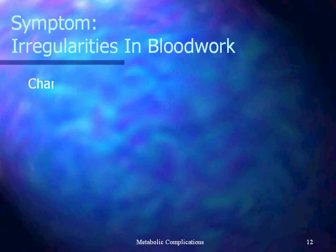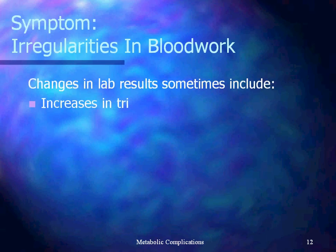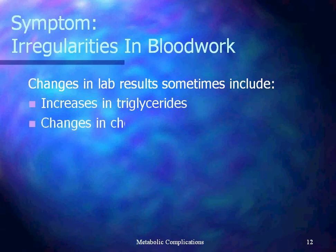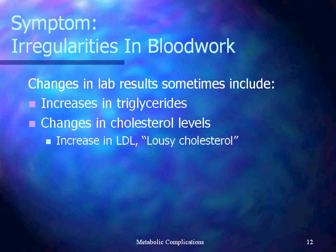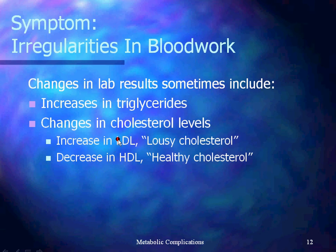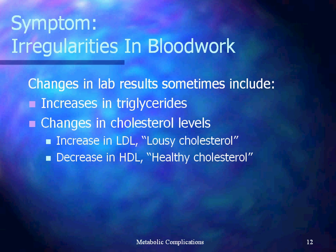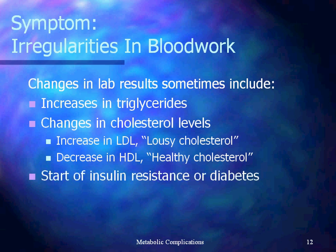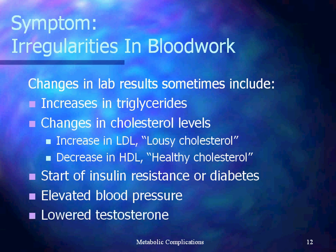Another symptom is irregularities in blood work. We can see changes in lab results: increases in triglycerides, changes in cholesterol levels — often an increase in LDL and a decrease in HDL. The way I remember it is that H means healthy and L means lousy. HDL is the healthy cholesterol that actually helps scrub out the bad type. Some of the changes we see are a decrease in that scrubbing cholesterol. We can also see the start of insulin resistance or diabetes, elevated blood pressure, and lowered testosterone.